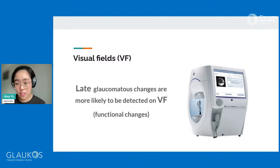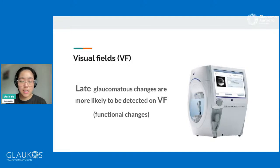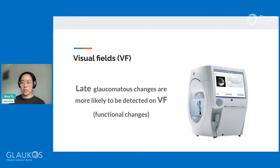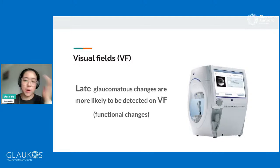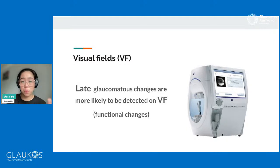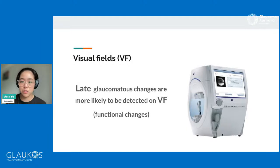I do get asked quite a bit about the difference between this and the driver's license visual field test. That one is slightly different. The one we check for glaucoma is done one eye at a time — you cover one eye with a patch and test each eye. For the driver's license test, it actually checks your binocular vision, so both eyes. The basis of the exam is pretty much the same — you still press the button when you see the flash of light. However, glaucoma tends to affect one eye first and then the other, so that's why we check each eye individually.